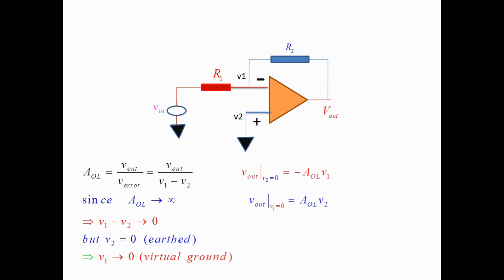In the case of the inverting amplifier shown in the figure, V2 is grounded, that is, at 0 potential. So V_error equals V1 minus V2 equals 0, meaning V1 equals V2. But V2 equals 0, so V1 is also equal to 0 — that is, grounded. However, it is not directly connected to ground, so it is called virtual ground. The difference between real ground and virtual ground is that real ground can sink any amount of current, but since the input impedance of the op-amp is infinite, virtual ground cannot sink any current. A portion of V_output is fed back through R2 and forces the virtual ground node to go to 0 potential.